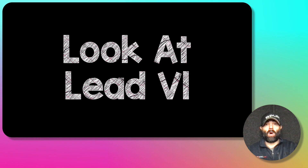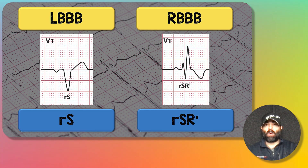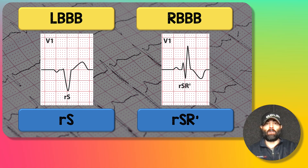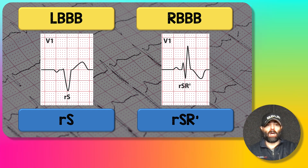Once the QRS is confirmed wide, look at lead V1. With a left bundle branch block you get a big S-wave, depolarization going away from V1. Whereas with a right bundle branch block you get a little S but predominantly a big R-wave — the RSR-prime pattern, which people call bunny ears or rabbit ears. With a left bundle branch block, you get predominant forces of depolarization going away from lead V1.